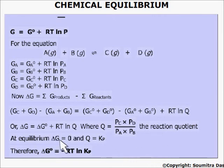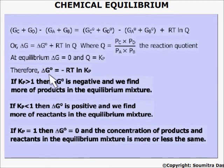At equilibrium, ΔG equal to zero and Q equal to Kp, the equilibrium constant. This implies ΔG standard equals to minus RT ln Kp. When Kp is greater than 1, then ΔG standard is negative and we find more products in the equilibrium mixture. If Kp is less than 1, then ΔG standard is positive and we find more reactants in the equilibrium mixture. When Kp is equal to 1, then ΔG equals to zero and the concentration of the products and reactants in the equilibrium mixture is more or less the same.